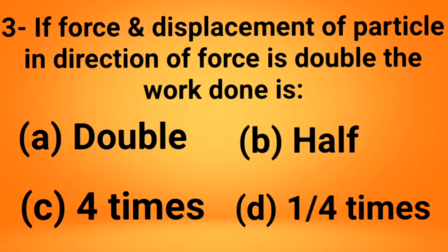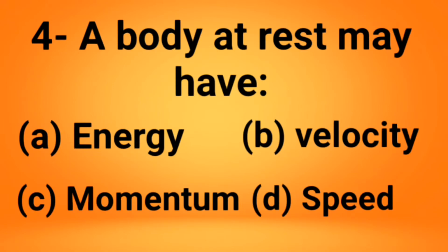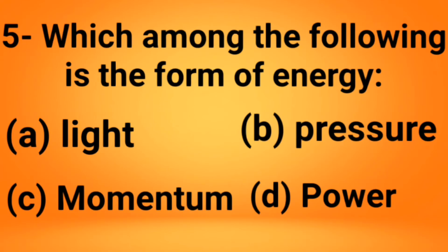The fourth MCQ: A body at rest may have energy, velocity, momentum, or speed? The answer to this question is option A, energy, because the body is not moving, so it will maintain its energy itself. The next MCQ: Which among the following is the form of energy: light, pressure, momentum, or power? The answer is light, as sunlight. It can be sunlight or solar light. It is a form of energy.